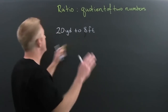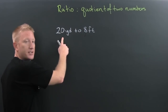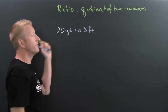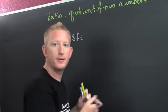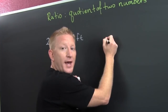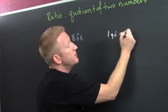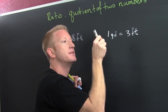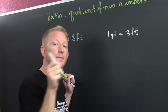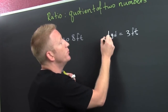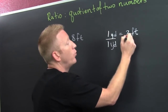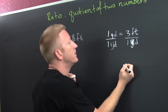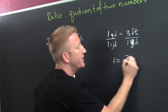We need to get them in the same units. It's yards to feet, so yards goes on top and feet goes on the bottom. To convert yards, I need the conversion factor: one yard equals three feet — not 12, that's inches. The unit I'm converting to needs to go on top, so I divide by one yard. That gives me three feet over one yard, which is feet per yard.